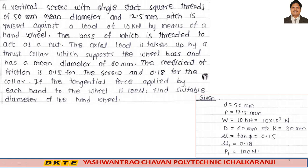The axial load is taken up by a thrust collar which supports the hub boss and has a mean diameter of 60 mm. The coefficient of friction is 0.15, so we have mu.